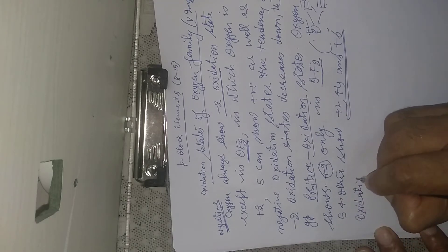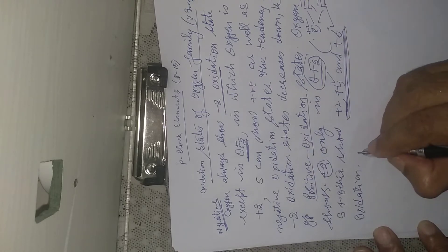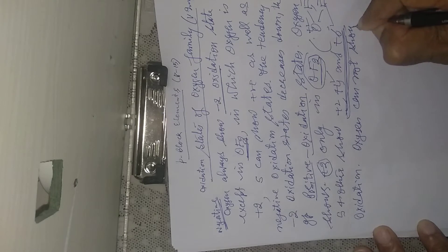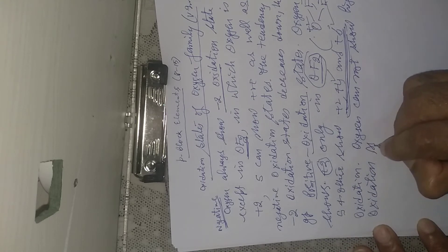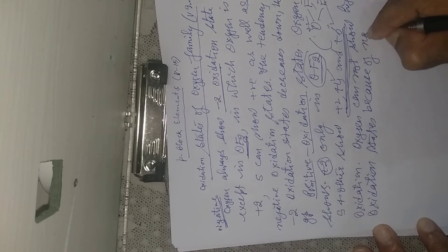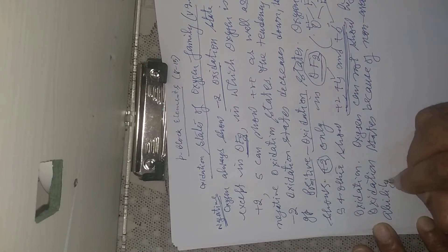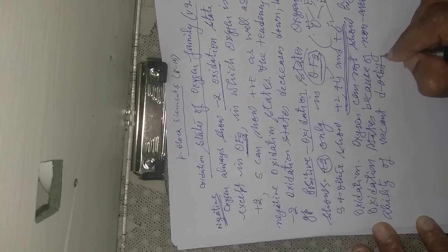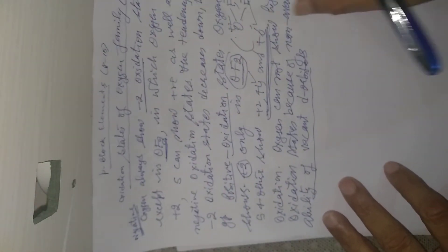Sulfur and other members show higher oxidation states like plus four and plus six as well, which oxygen cannot. Oxygen cannot show higher oxidation states because of non-availability of vacant d-orbitals. Since oxygen has no vacant d-orbital, it cannot expand its valency.